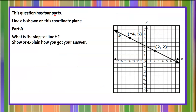Our question has four parts. We're given line k that is shown on this coordinate plane that we will use for all four parts. Here's part a: what is the slope of line k? Show or explain how you got your answer. So here's where you pause the video, find the slope of line k, and then come back to see my solution.